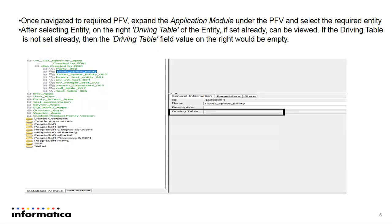Select the entity required. After selecting the entity, on the right side of the pane, you can see the driving table option. If the driving table is already set for the entity, you will see the table name under the driving table option.